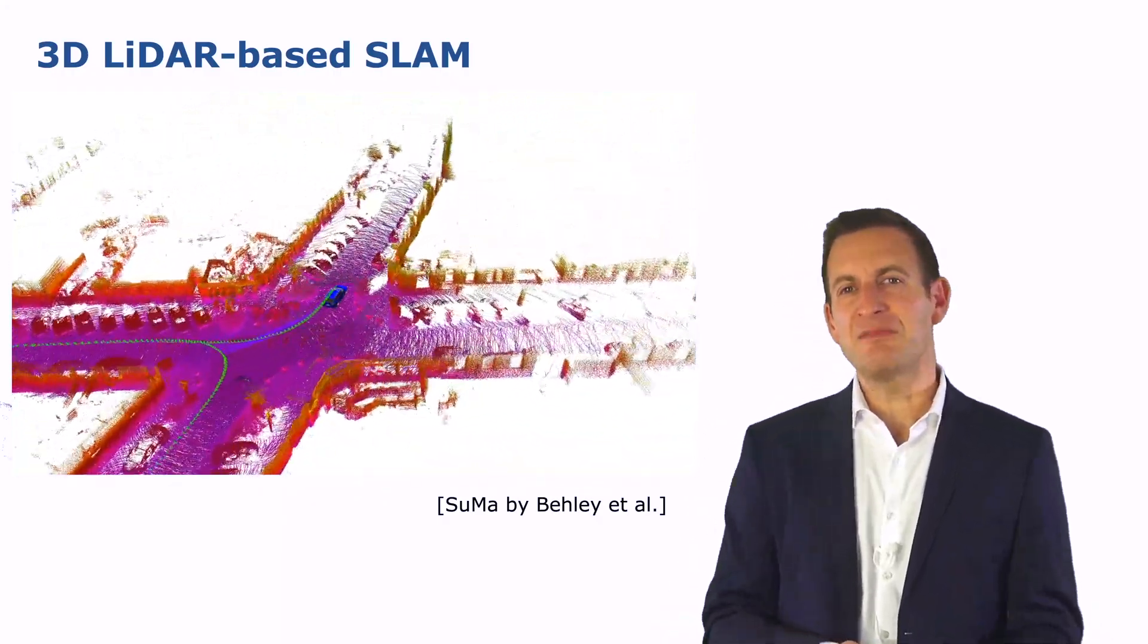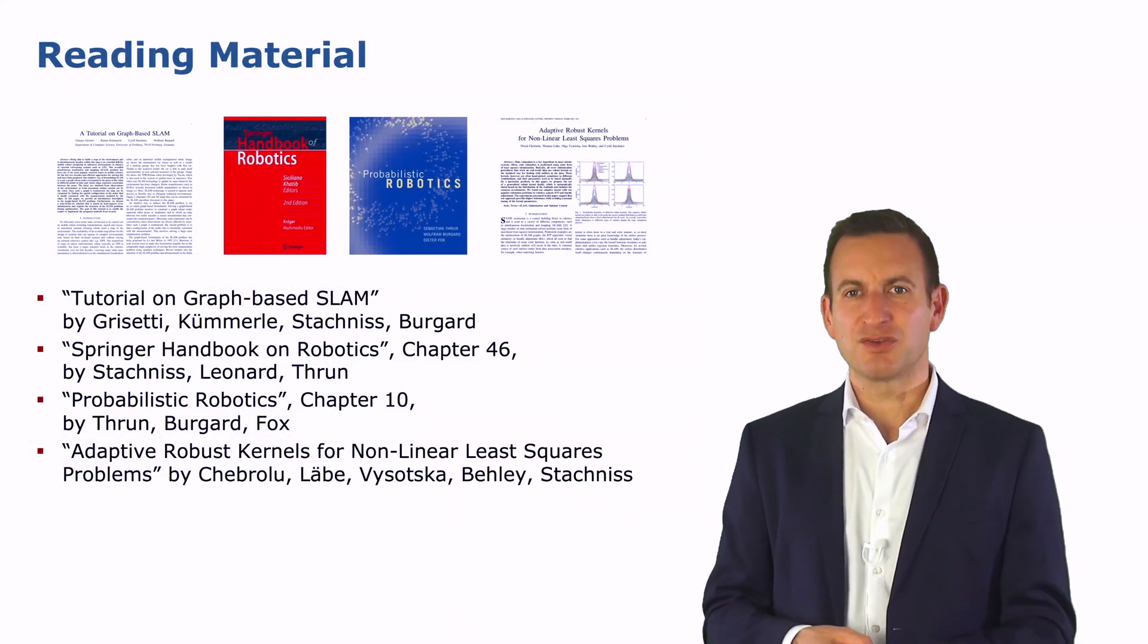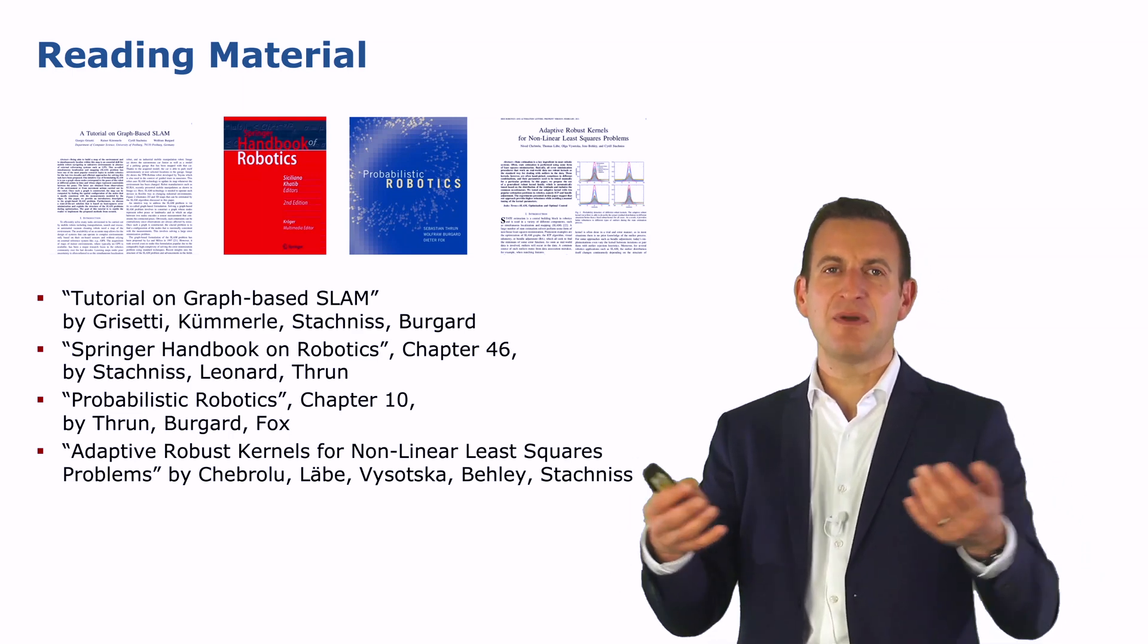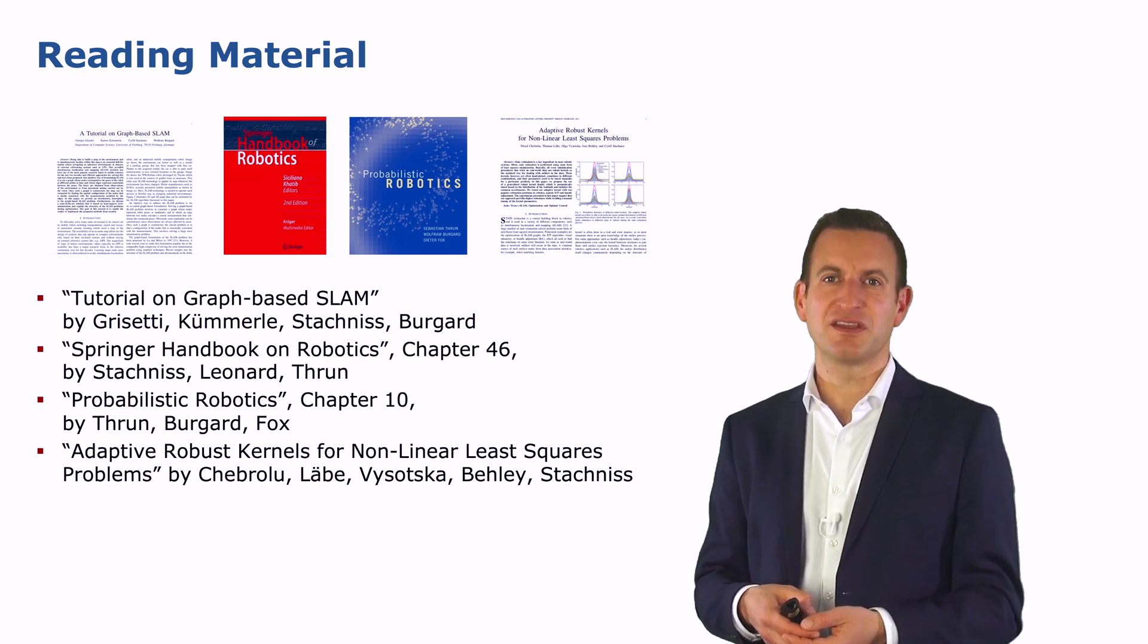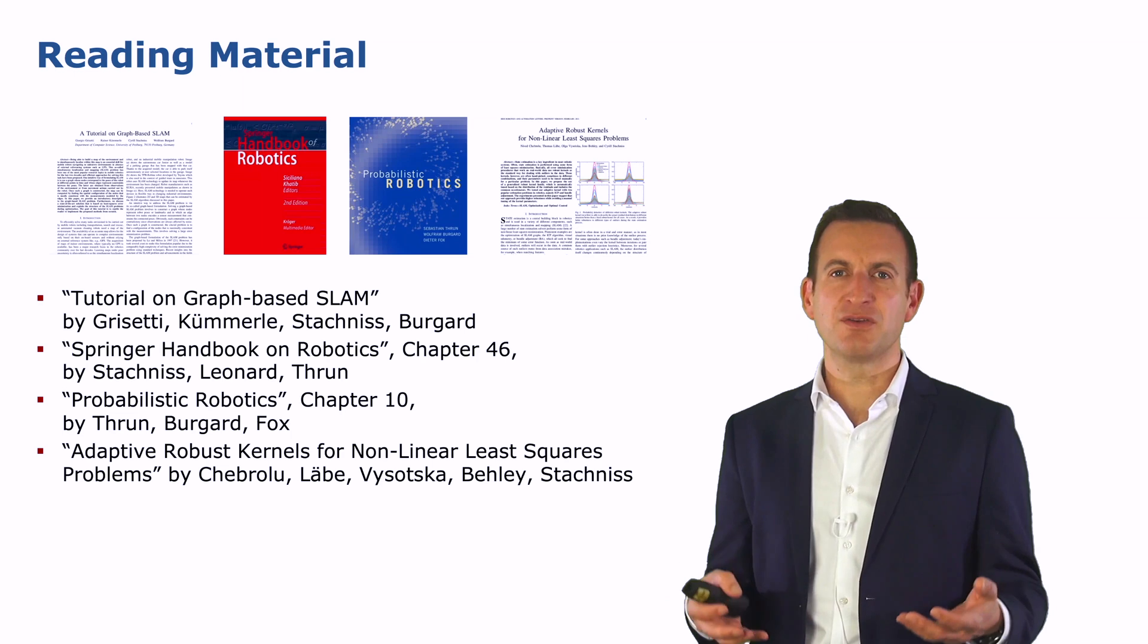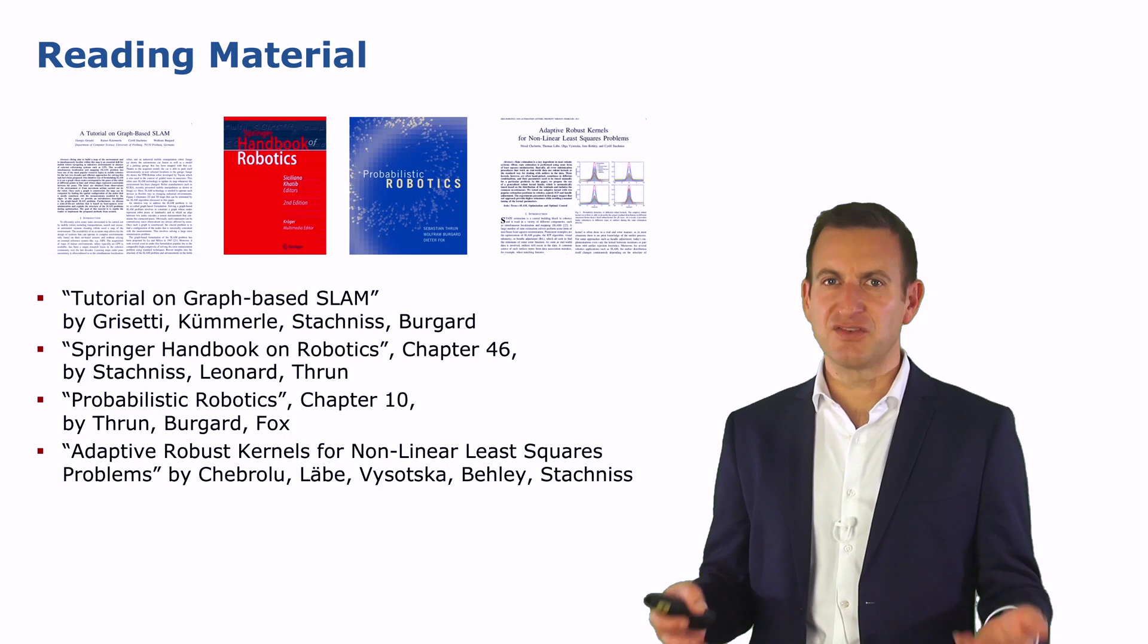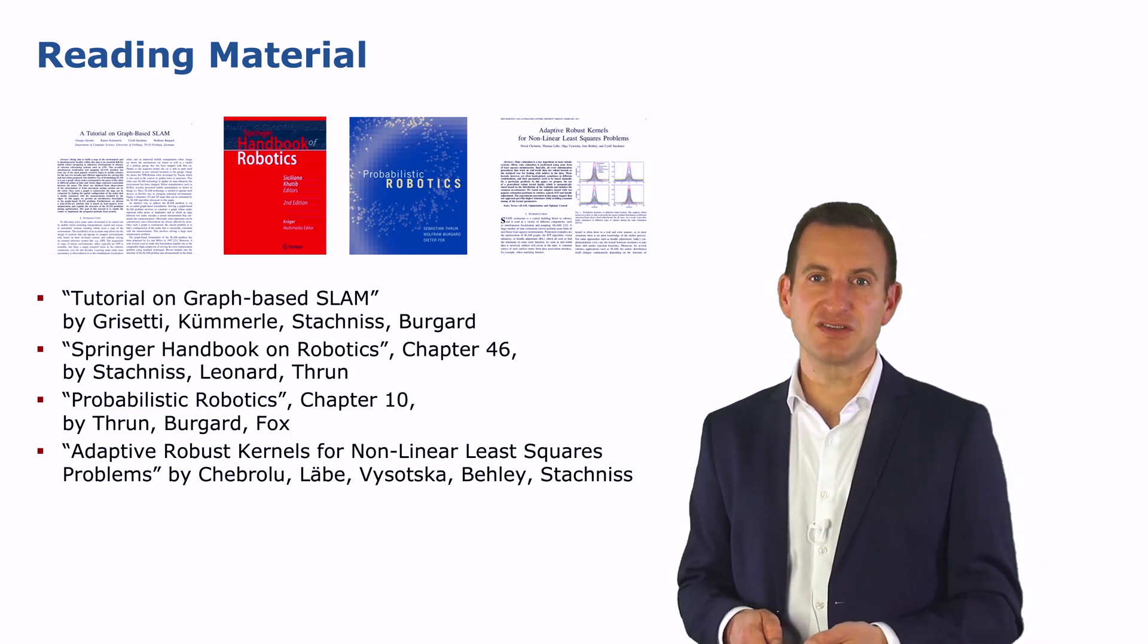If you want to dive a bit deeper into SLAM and graph-based SLAM, I also brought you some recommendations on what to read. There's our tutorial on graph-based SLAM, also related to this video material here, which is probably the starting point for most of the activities. Then there's a Springer handbook on robotics, which gives you a very good overview. And if you then want to dive deeper, the Probabilistic Robotics book is the place to look into, at least as your starting point for further investigations.